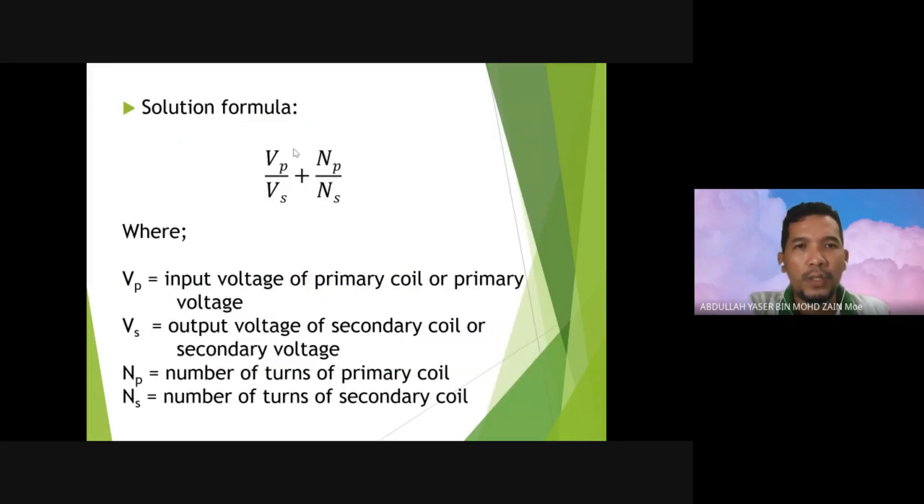For the formula, because of this transformer, we have a formula. The formula is VP per VS equals NP per NS.